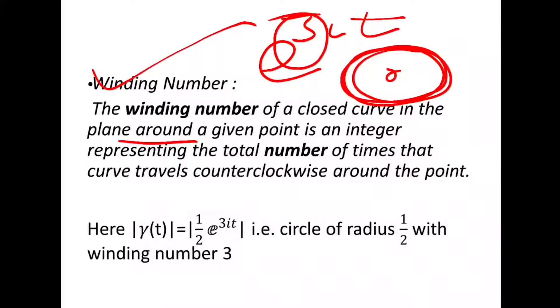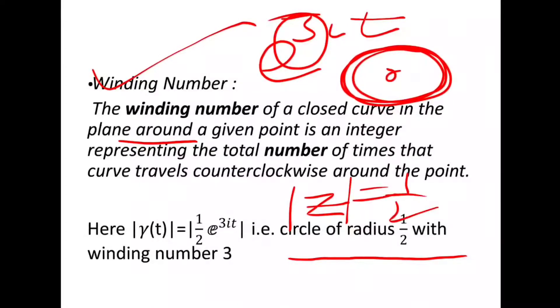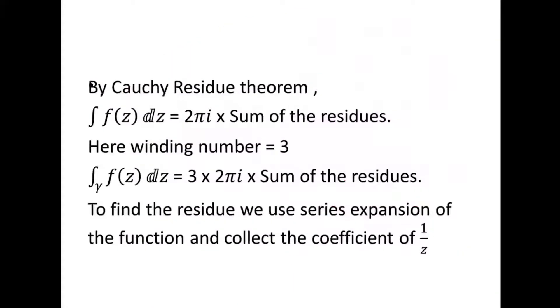Now γ = (1/2)e^(3it), so the circle is of radius 1/2 and the pole 0, 0, 0 lies inside |z| = 1/2. Now we find the residue. We use the Cauchy residue theorem in general form.